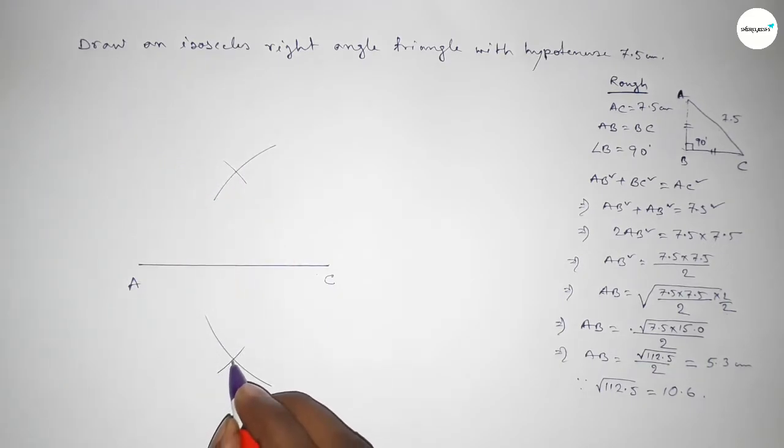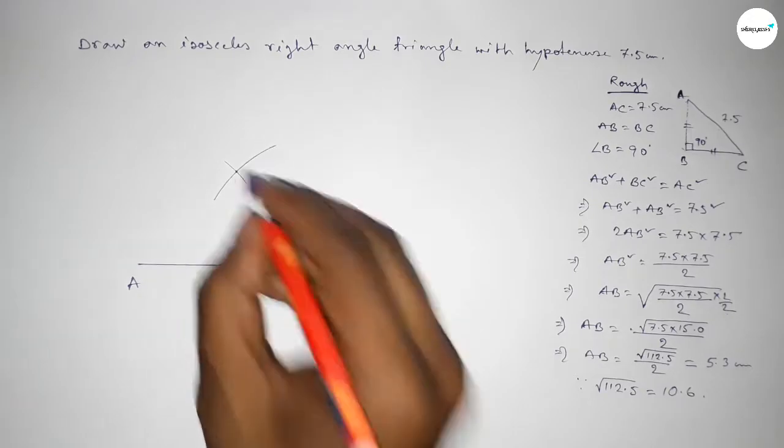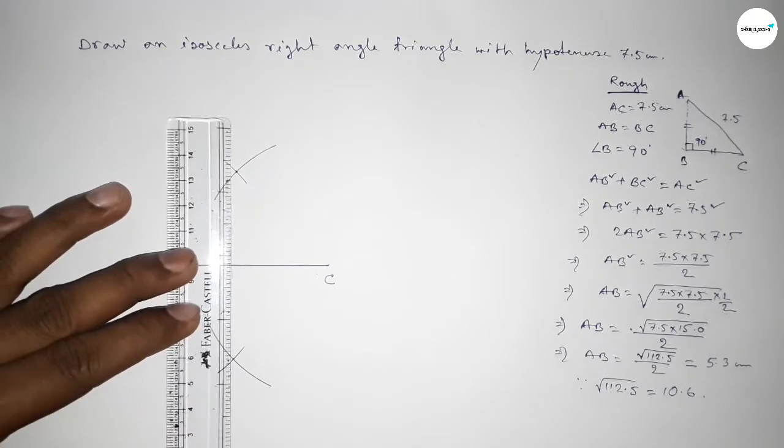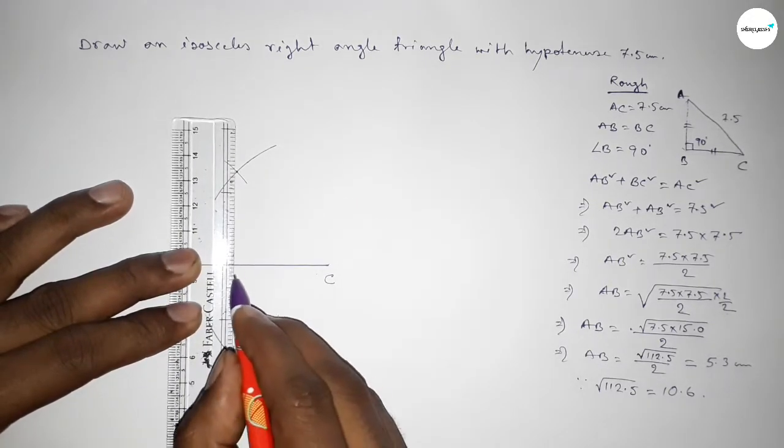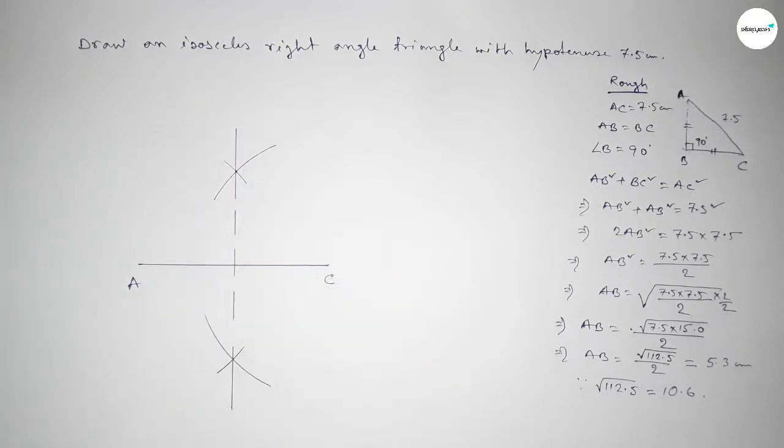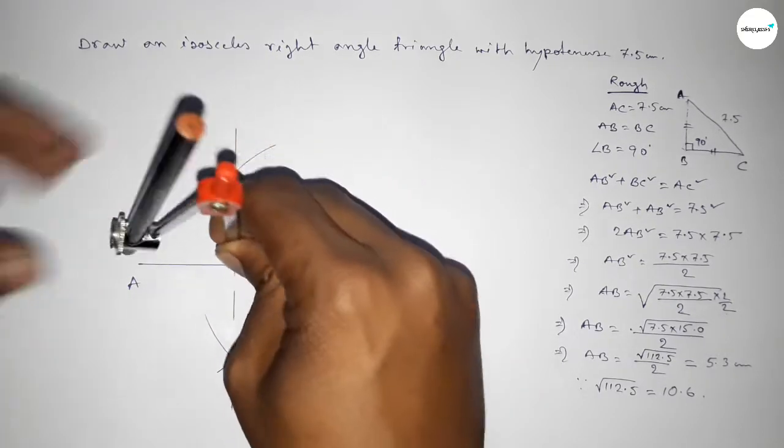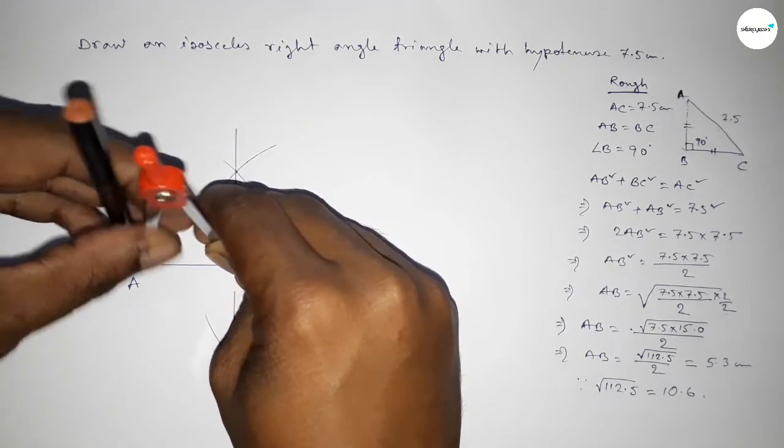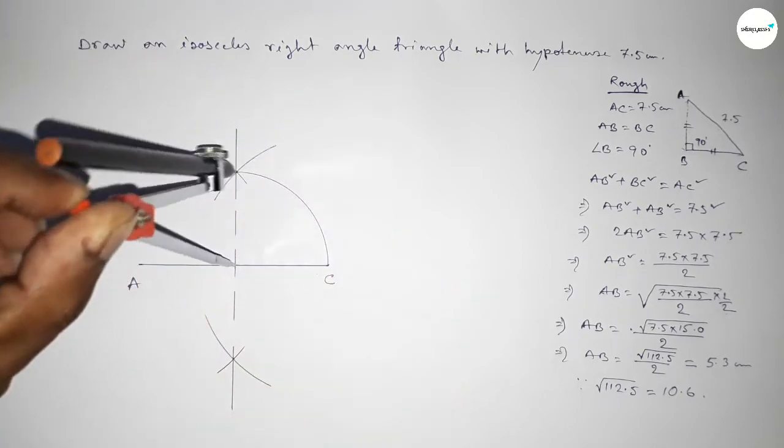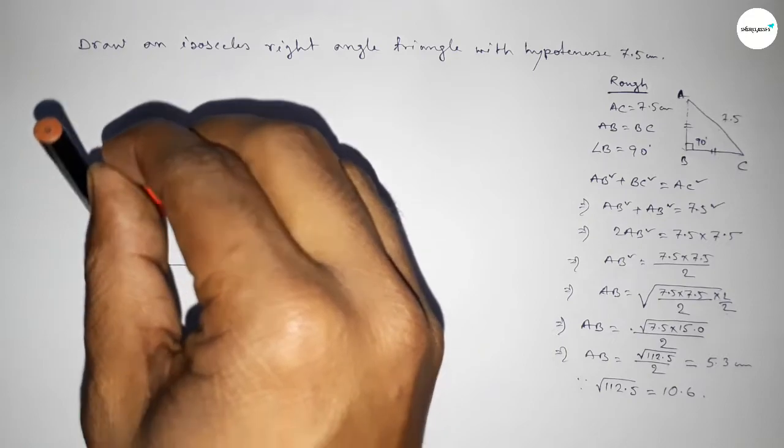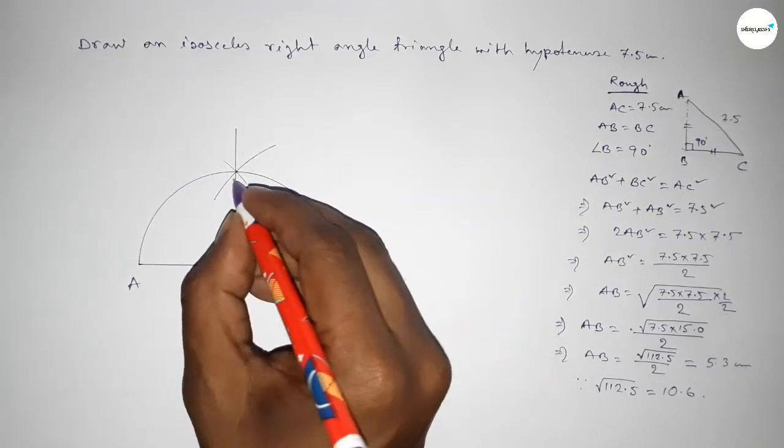So both curves intersect at two points. Now first joining this bisector, joining this. Next, putting the compass here and taking the distance OA and OC to draw here a semicircle. So the semicircle and the bisector meet at point B.